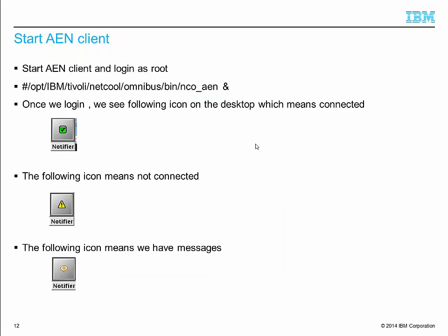Now we start the AN client using the ncu-an command. Once we log in and connect, we will see the icon with a green check. A yellow exclamation mark icon means not connected. A yellow check also means not connected. The chat box icon means we have messages.